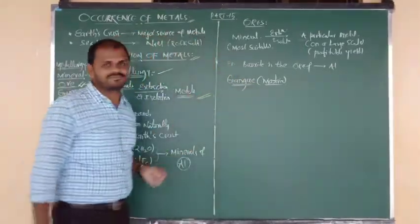The minerals and ores which are found from the earth crust — along with those minerals, from the earth crust we will get some soil particles, some clay particles, and some sand particles, nothing but rocks. Such impurities — soil and rocks — which come along with the minerals and ores are called gangue.